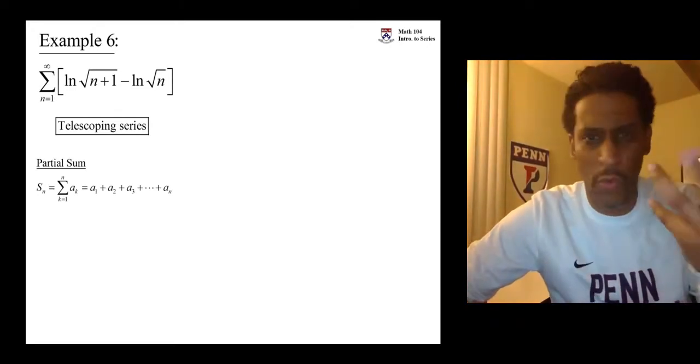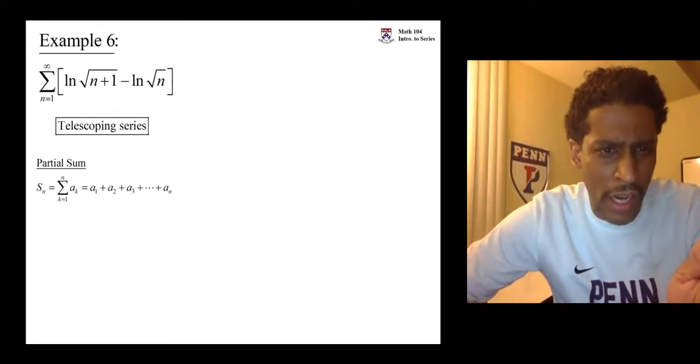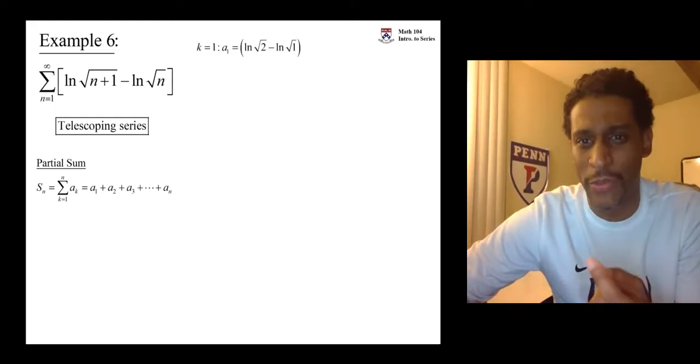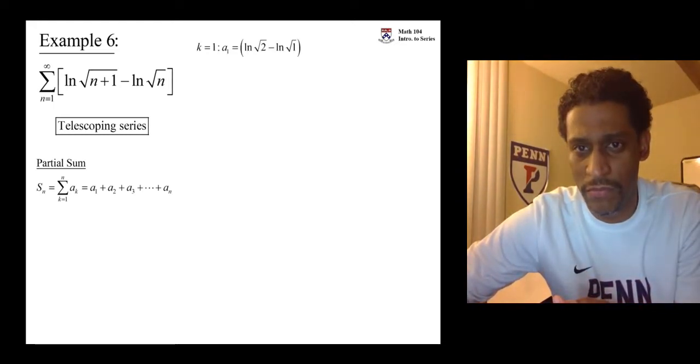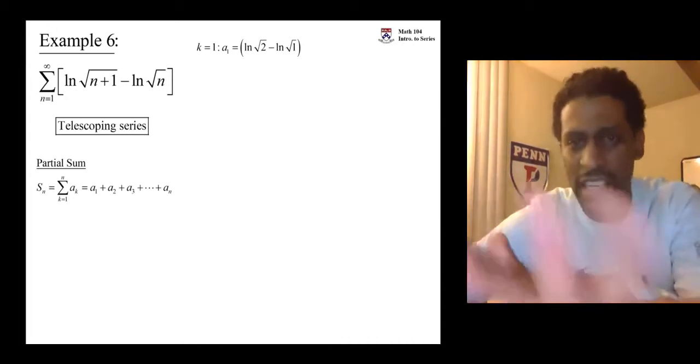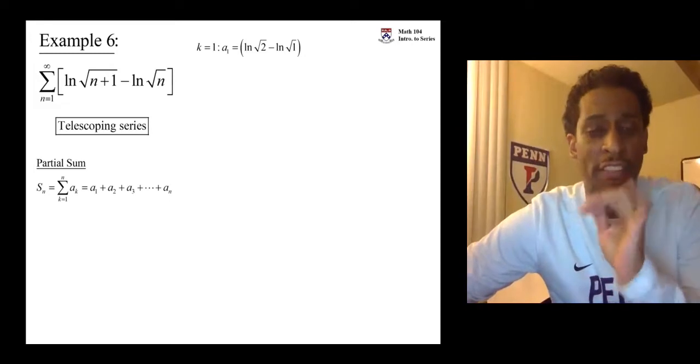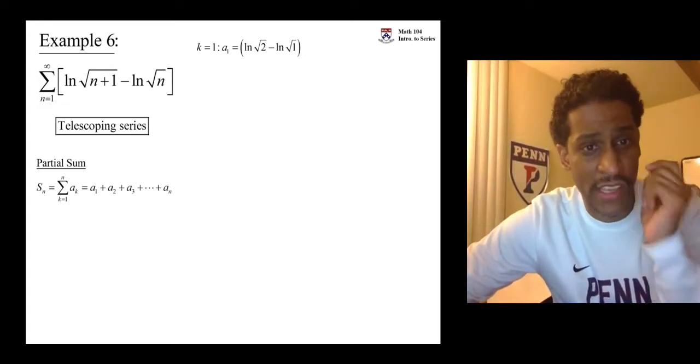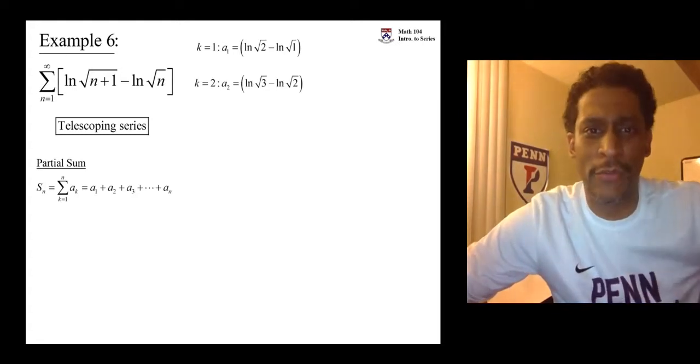So when k is 1, what is the a sub 1 term? You plug a 1 in for n and you get the ln of root 2 minus the ln of root 1. Okay, leave it. I know ln of 1 is 0, but leave it for now. Second term, k equals 2, ln of root 3 minus ln of root 2.